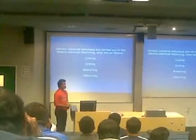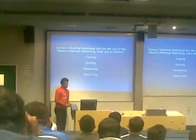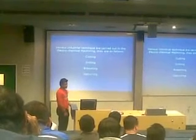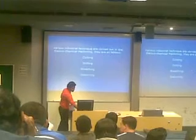There are various industrial techniques carried out such as cutting and drilling. The electrochemical machining depends on the following factors: the rate of machining, surface formation, accuracy and dimensional control, and finishing.